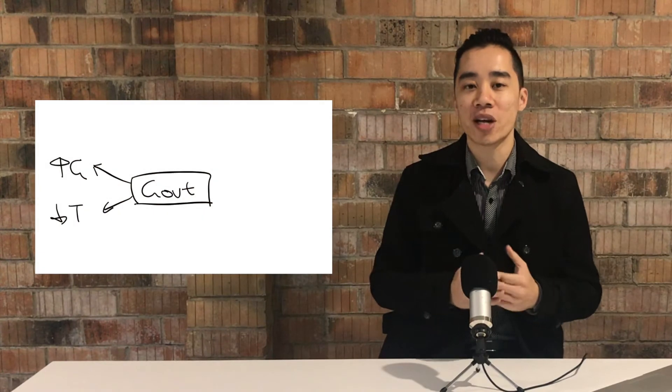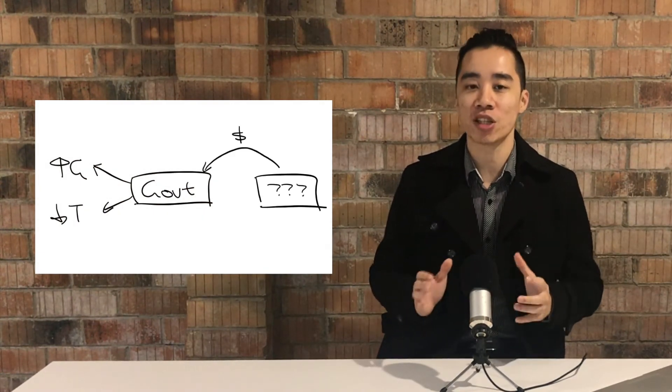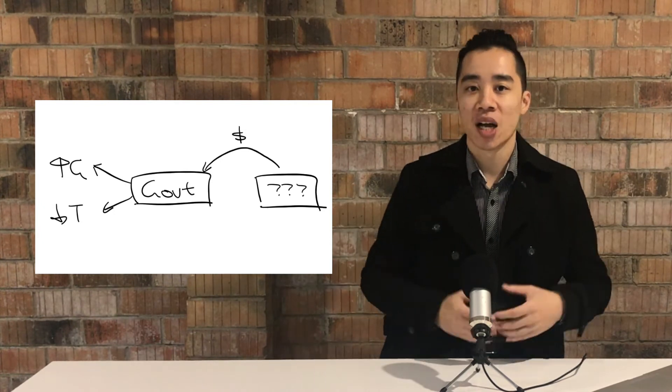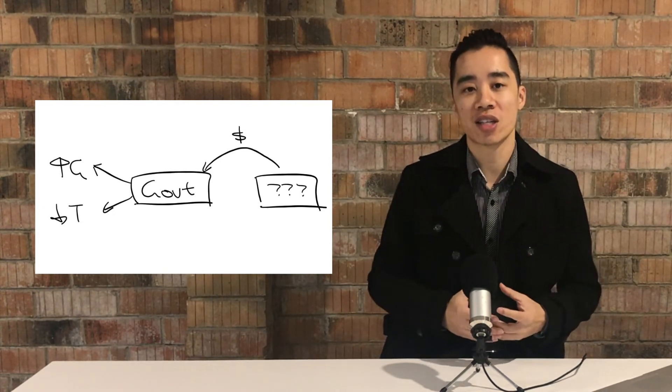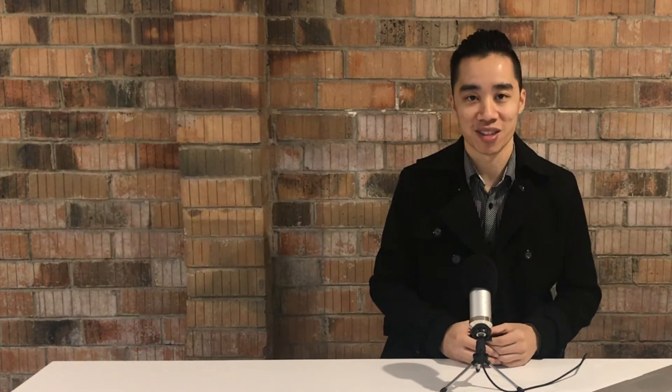In our previous lessons, we established that the government usually runs a budget deficit when it takes an expansionary stance — that is, when government expenditure is greater than tax receipts. The question I'm trying to answer today is: where does the government get the extra money to fund the shortfall between its spending and its revenue? I'll also discuss some of the advantages and disadvantages for each option.